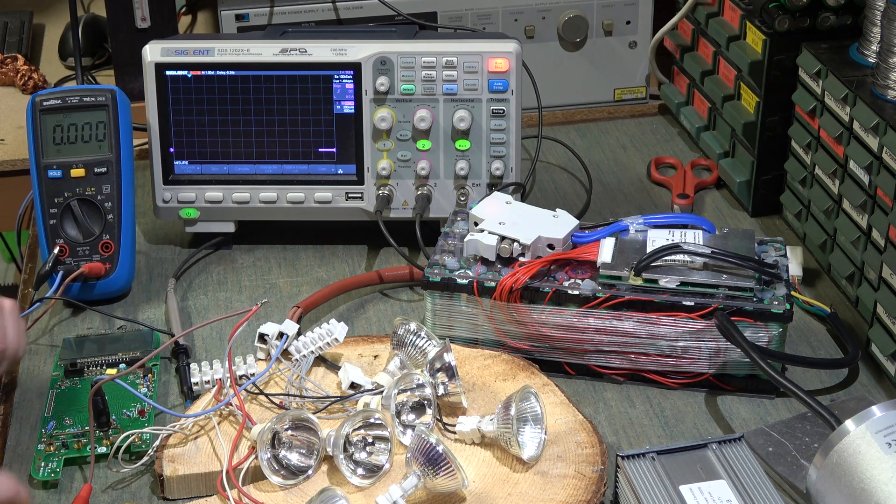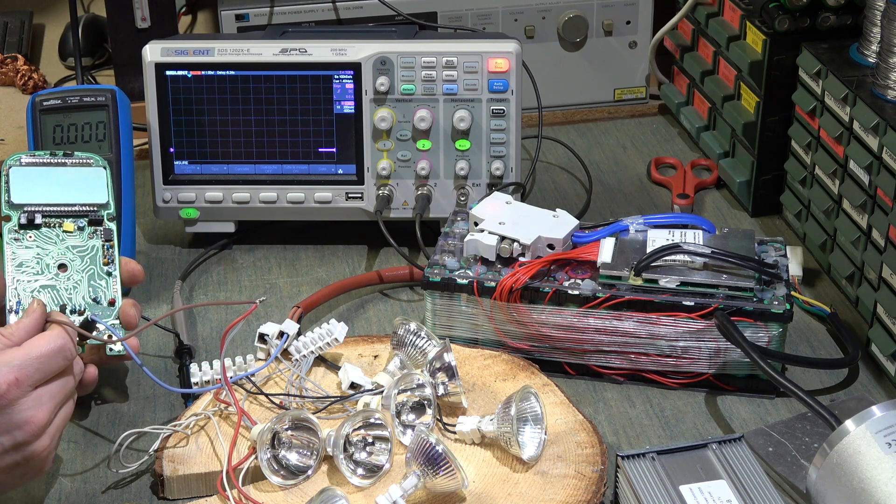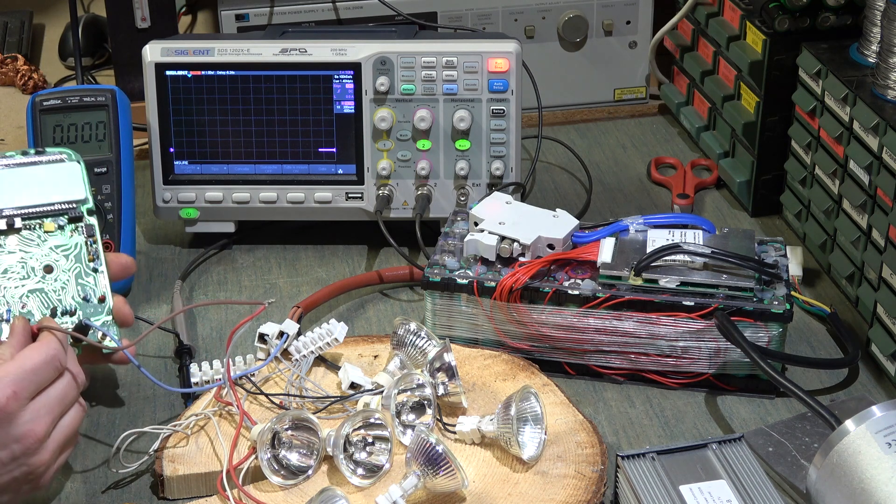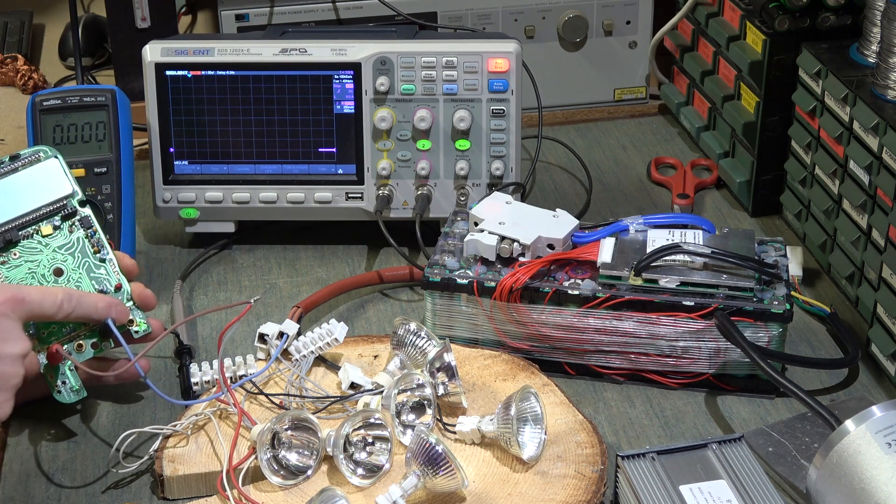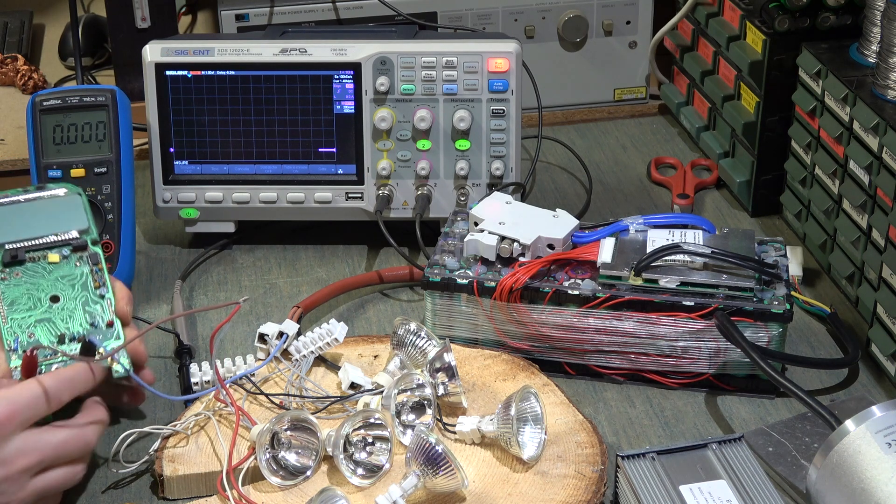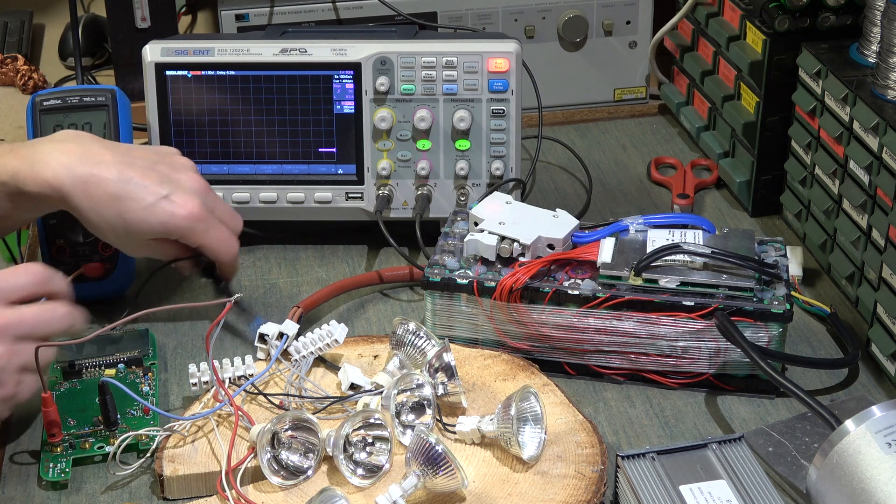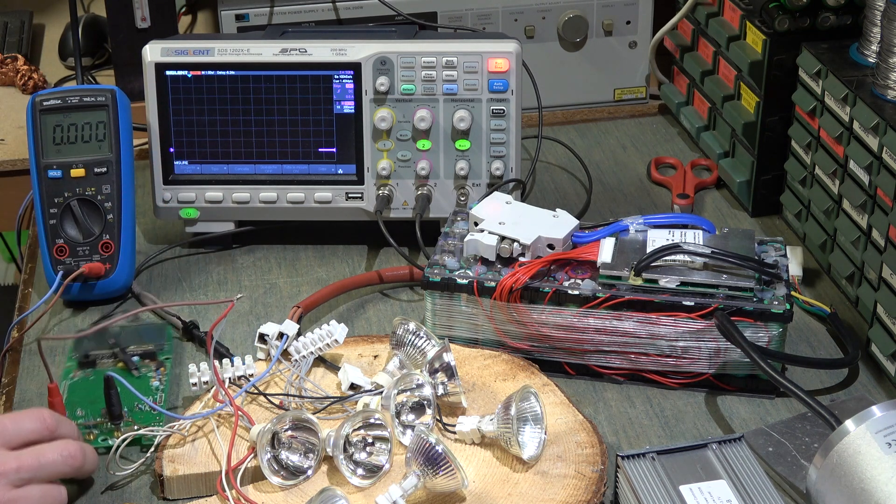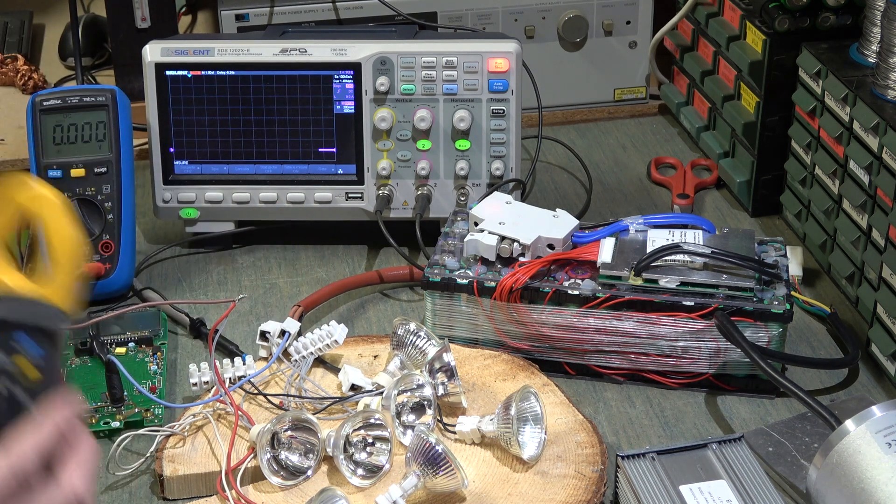Adesso io chiudo il circuito con questi due coccodrilli e in serie come cortocircuito ho questo shunt che poi andrò a prelevare con la sonda dall'oscilloscopio per vedere gli ampere. Questo lo vediamo dopo, adesso vediamo l'assorbimento col tester.